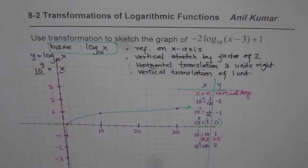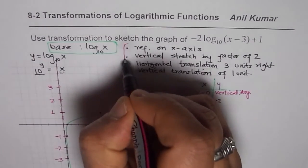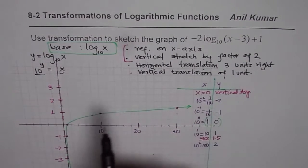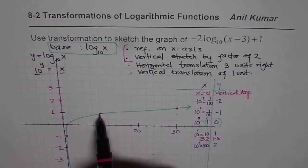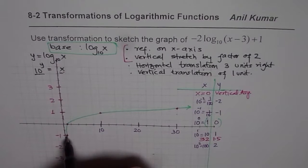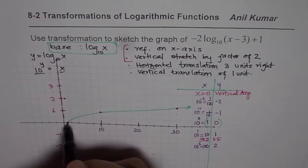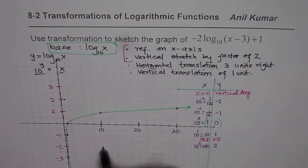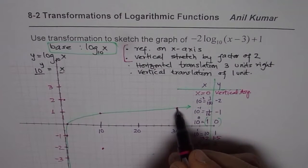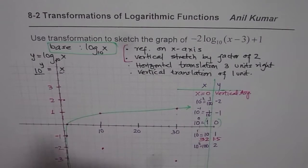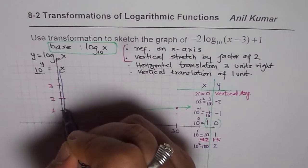Now we will follow the steps to get the next function via transformation. We combine the reflection on the x-axis and vertical stretch by factor 2 first. The x values remain the same; the y values get multiplied by minus 2. So if y was minus 1, it becomes plus 2. If y was 0, it stays 0. If y was 1, it becomes minus 2. And 1.5 times minus 2 gives minus 3. This gives us the transformed curve for minus 2 log to the base 10 of x.